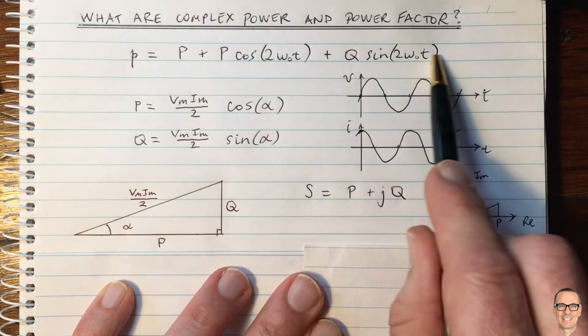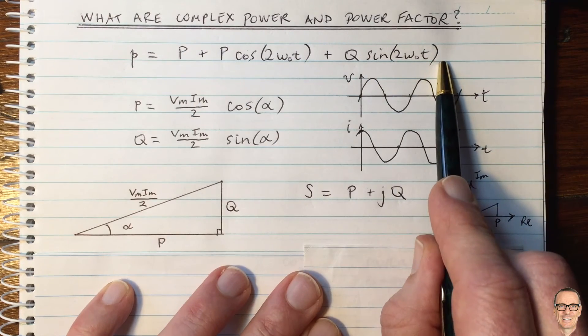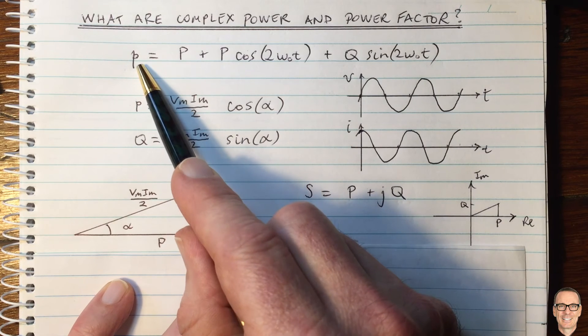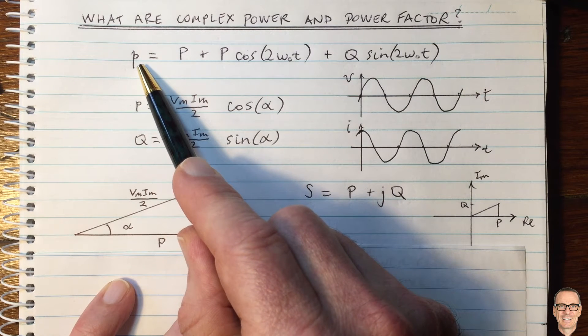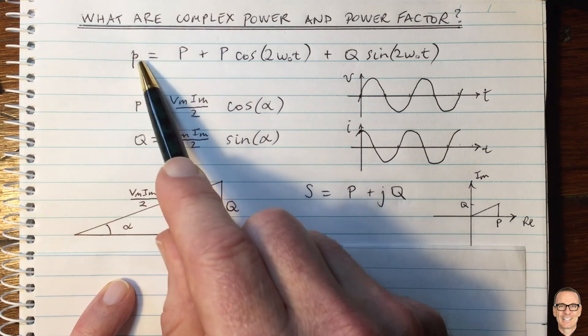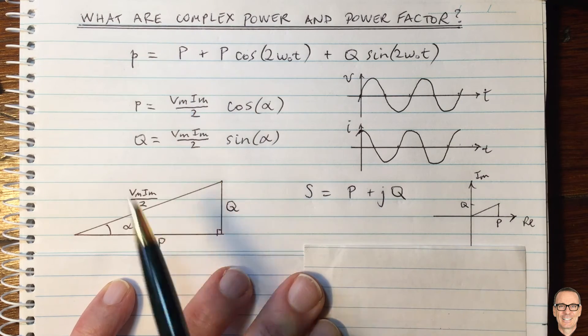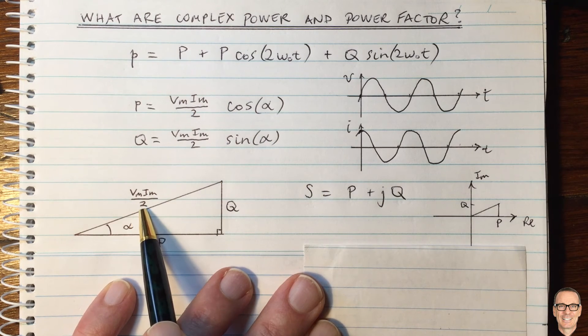Of course, the instantaneous power is given by this expression here. If you want to understand the power over a period of time, for example, then you need to integrate this expression. It's not V_m I_m divided by 2.